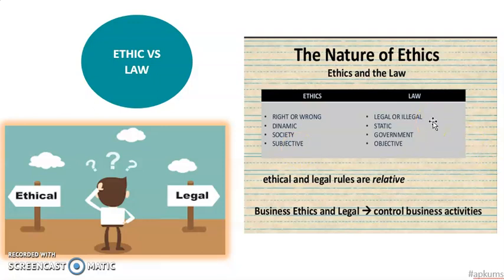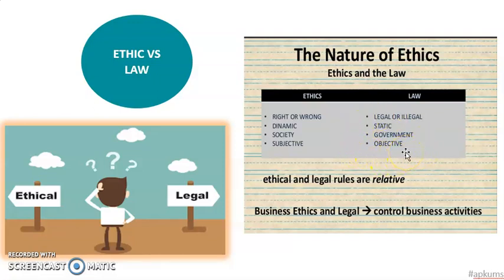For law, law is legal — it tells you what is right legally and what is illegal, something we should not do. If you do something illegal, you will be penalized, either by being put in jail or having to pay a fine. Law is static, meaning it will not change by itself; it will only change if the government feels it is needed. The government determines the laws, and the law must remain the same, imposed on everybody in the same society. So legal and ethical are both relatively important — they control business activities.